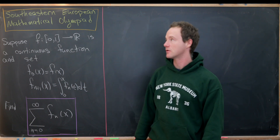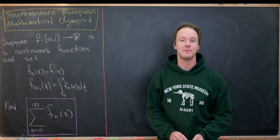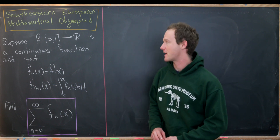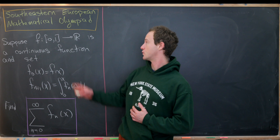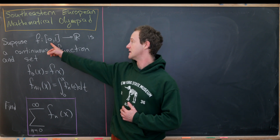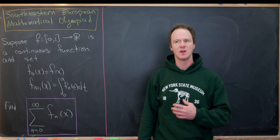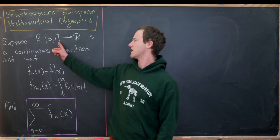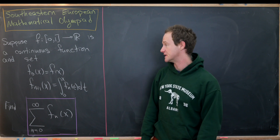Today I've got a nice advanced calculus problem that comes from the Southeastern European Mathematical Olympiad — an undergraduate math contest. We want to start with a continuous function from the interval [0,1] to the real numbers, although as you'll see, it doesn't really matter that we've got [0,1] here. All we need is a closed interval.